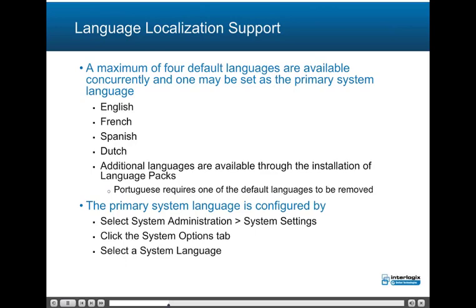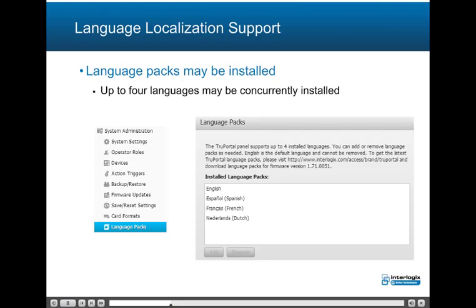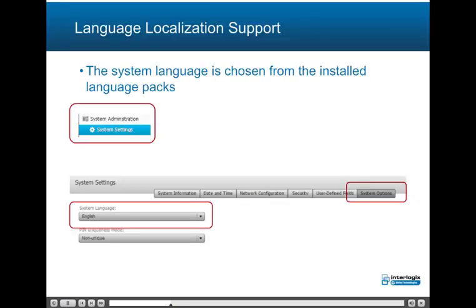Language localization support: a maximum of four default languages are available concurrently, and one of these four may be set as the primary system language. The languages are English, French, Spanish, and Dutch. Additional languages beyond these four are available through installation of language packs; currently Portuguese is available, but this requires removing one of the four default languages. The primary system language is configured by selecting the System Administration tab, then System Settings, clicking the System Options tab, and selecting a system language. Language packs may be added or removed, and the default system language is chosen by selecting a language from one of the installed language packs.